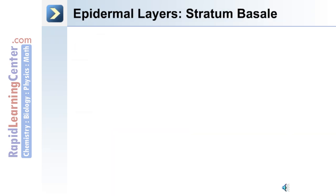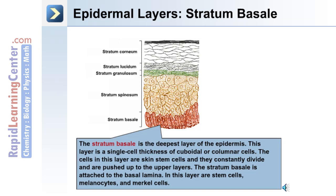The fifth and deepest layer from the apical surface of the epidermis is the stratum basal, or the basal layer. This layer is made up of a single cell thickness of either cuboidal or columnar cells. Within this layer are the skin stem cells that give rise to the other cell types. They constantly divide and are pushed up to the upper layers of the epidermis. The stratum basal is attached to the basal lamina, and in this layer are stem cells, melanocytes, and Merkel cells.